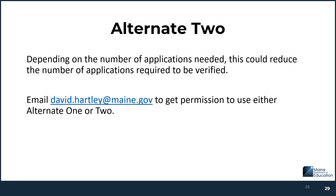If you're going through the process and have your approved applications — which happens often in a smaller district — and you do not have any error-prone applications, you're still going to opt to do the error-prone. You're going to complete it. There's a spot in CNPweb where you'll indicate you didn't have any, and it will take that and move on. If you purposely want to do Alternate One or Alternate Two, that's when you need to get permission.